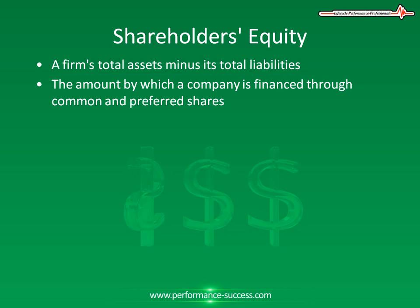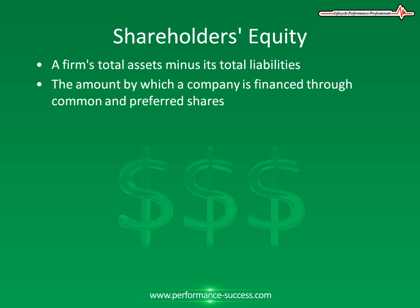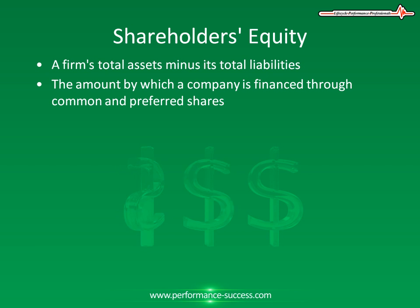Shareholders' Equity comes from two main sources. The first and original source is the money that was originally invested in the company, along with any additional investments made thereafter. The second comes from retained earnings, which the company is able to accumulate over time through its operations. In most cases, the retained earnings portion is the largest component.